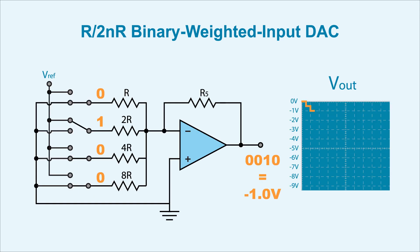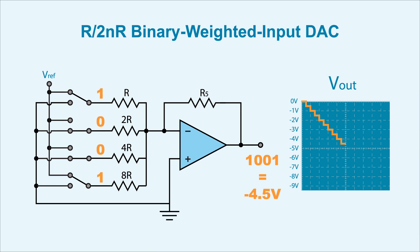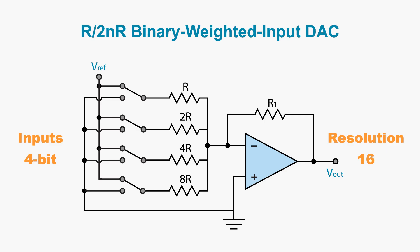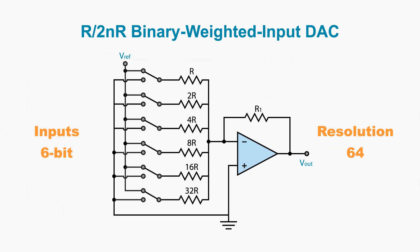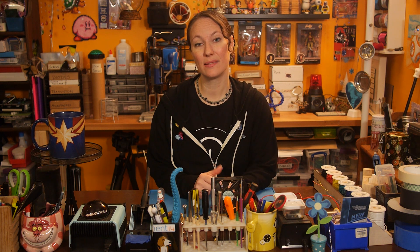The differing resistor values give each input a certain weight, which translates to evenly divided voltages at the output. As the binary number counts up, representing input voltage changes, the output voltage increases consistently. The number of voltage steps is defined by the resolution, which is set by the number of bits, which is set by the number of inputs. Adding more inputs increases the resolution. With this DAC, as the resolution increases, a larger variety of resistor values are needed. Due to the manufacturer's tolerance of the resistors, the higher the values and the wider the range, the less precise they are, and the less accurate the signal conversion is.